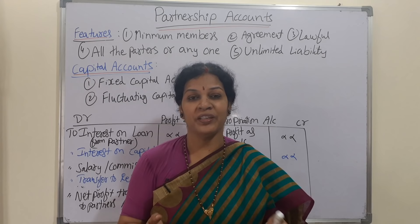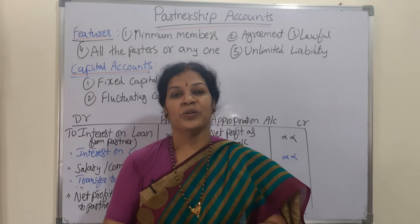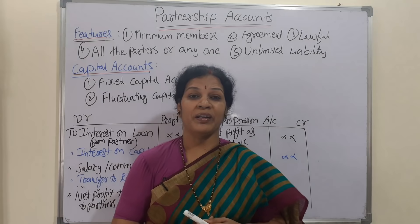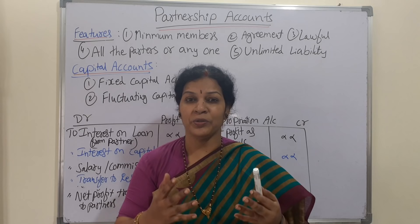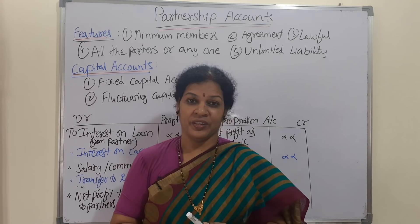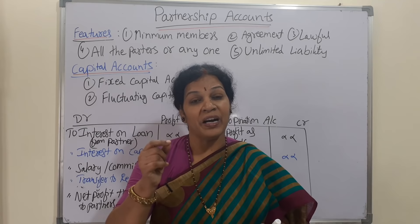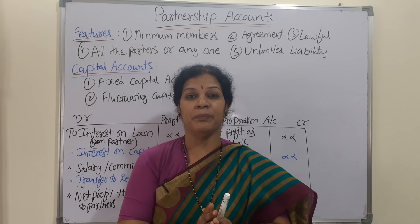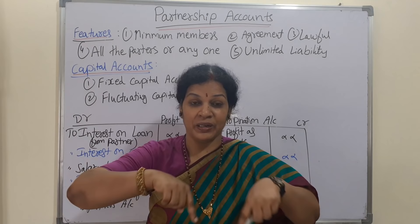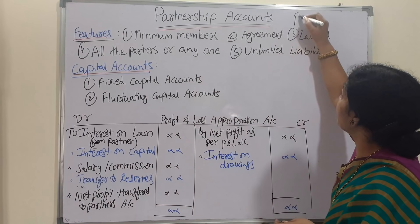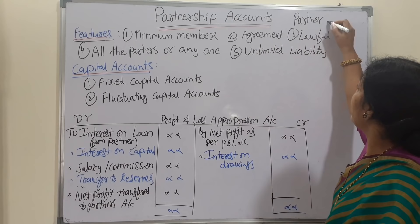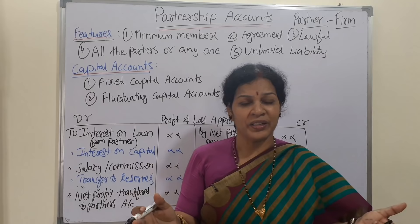Coming to partnership accounts — two or more than two members together, when they want to start any kind of business with the aim of profit, that we call a partnership. We call all the members partners, and the organization or business together we call a firm. Partner means members of the partnership, and firm means the total partnership business.